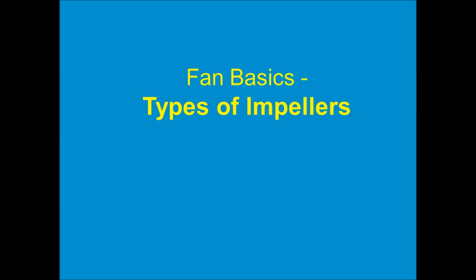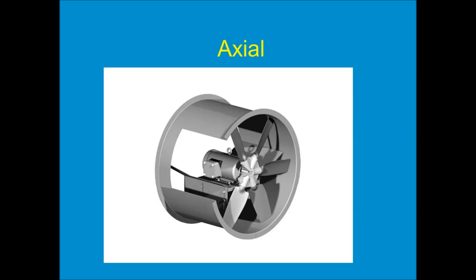The heart of any fan is the impeller, and there are a few different basic types of impellers used in commercial HVAC. The first type is the axial impeller. An axial impeller has blades attached to a central hub; the blades are pitched, and when the entire assembly rotates, the pitch of the blade pushes against the air and creates a pressure differential, moving the air. With an axial impeller, the direction of airflow is parallel to the axis of rotation.